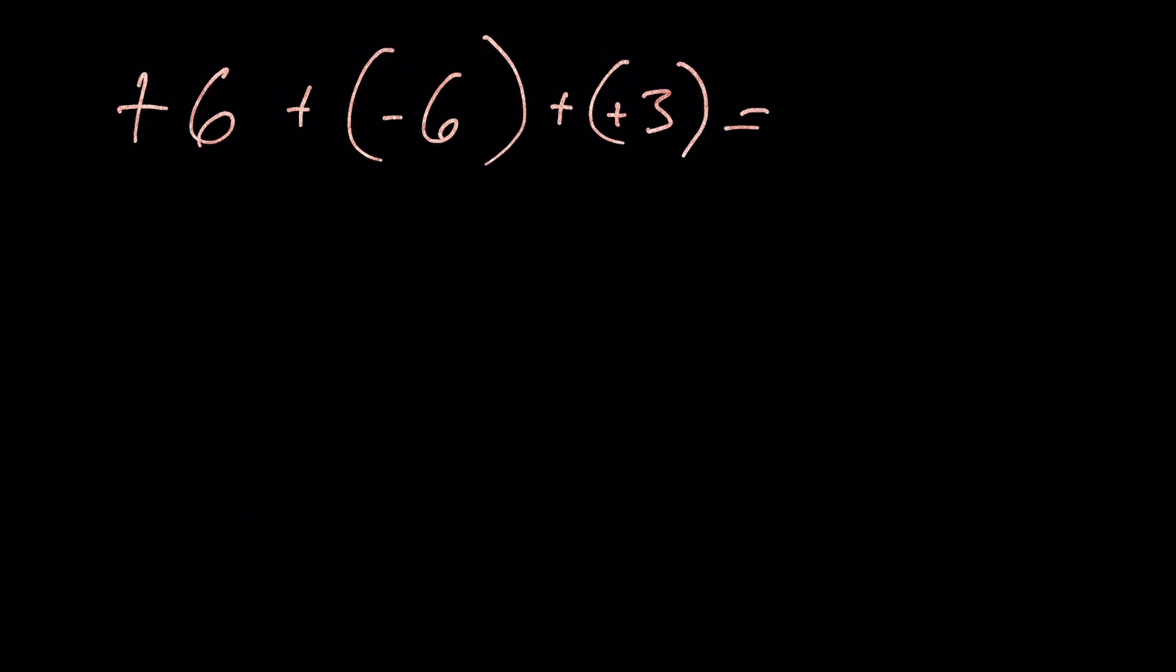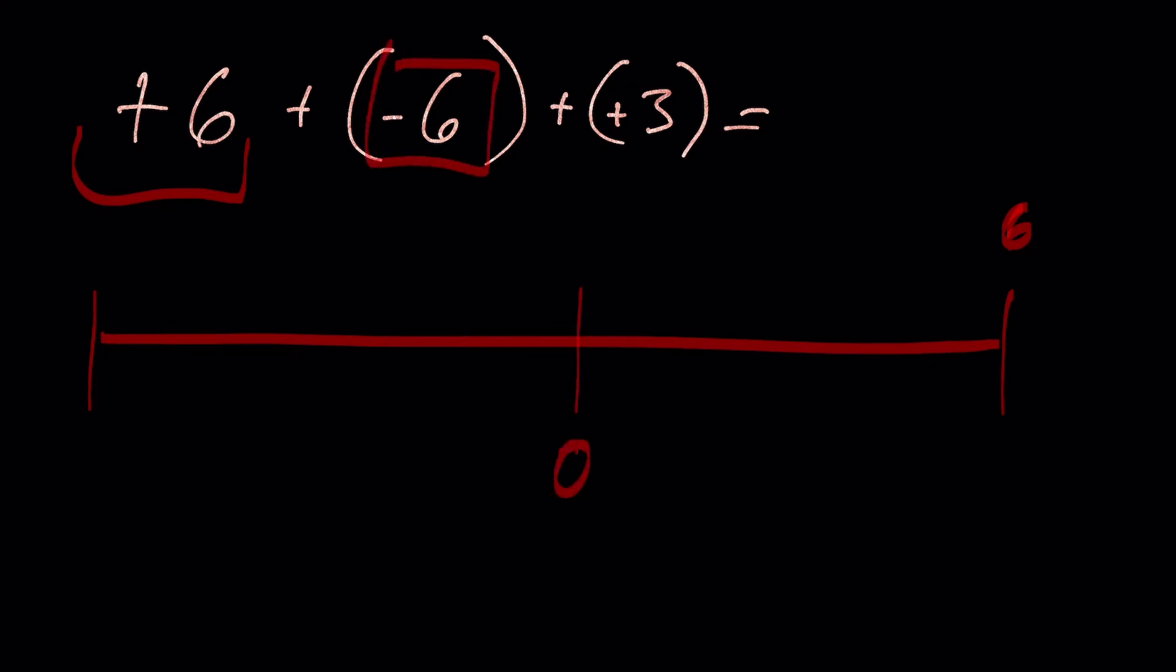Okay, so again, now I can just cancel out numbers. So I have a gain of 6, a positive 6 here, and I have a loss of negative 6. And so I know that that's going to take me to 0. So I can actually just look at that and cancel them out and know that I am going to be left with that gain of 3.